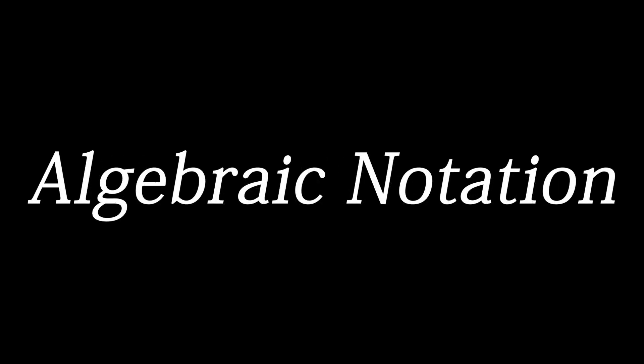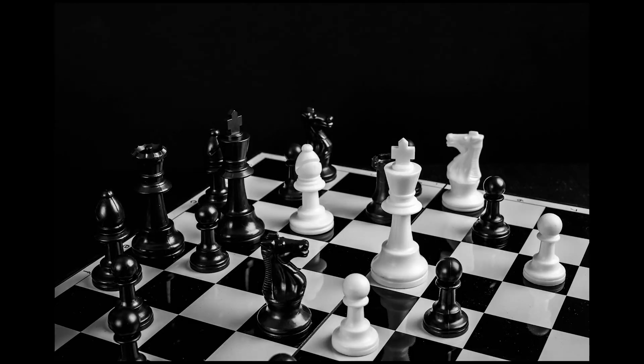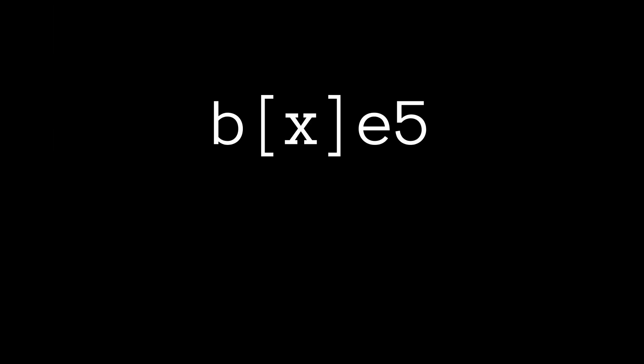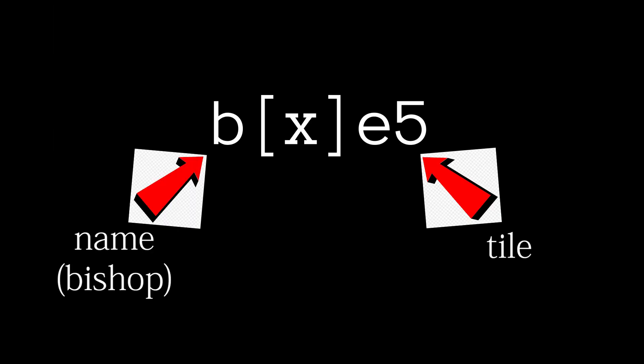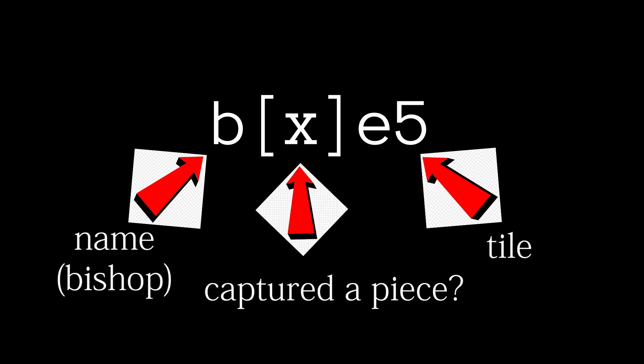Chess notation, or algebraic notation, is the standard method for recording and describing moves in a game of chess. A move is denoted by the name of the piece, the square it moved to, an x if it captured a piece on that square, and so on.